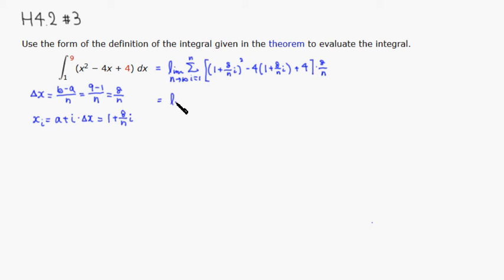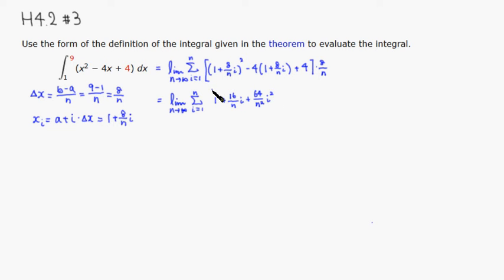We still have the limit as n approaches infinity and the summation from i = 1 to n. Multiplying out: 1² = 1, 2·1·(8/n)i = 16i/n, and (8i/n)² = 64i²/n². Then distributing -4 gives -4 and -32i/n, and plus 4 at the end. The delta x factor of 8/n is still there.